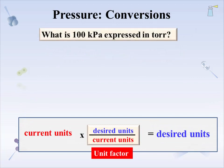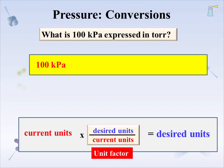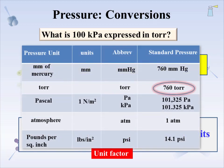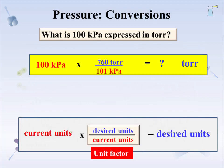One more example: what is 100 kPa expressed in Torr? The current unit is 100 kPa and the desired unit is Torr. Returning to the pressure units table, identify Torr and kPa in the standard pressure column. Create a unit factor with kPa in the denominator so they cancel out. The result: 100 kPa is the same pressure as 752 Torr.